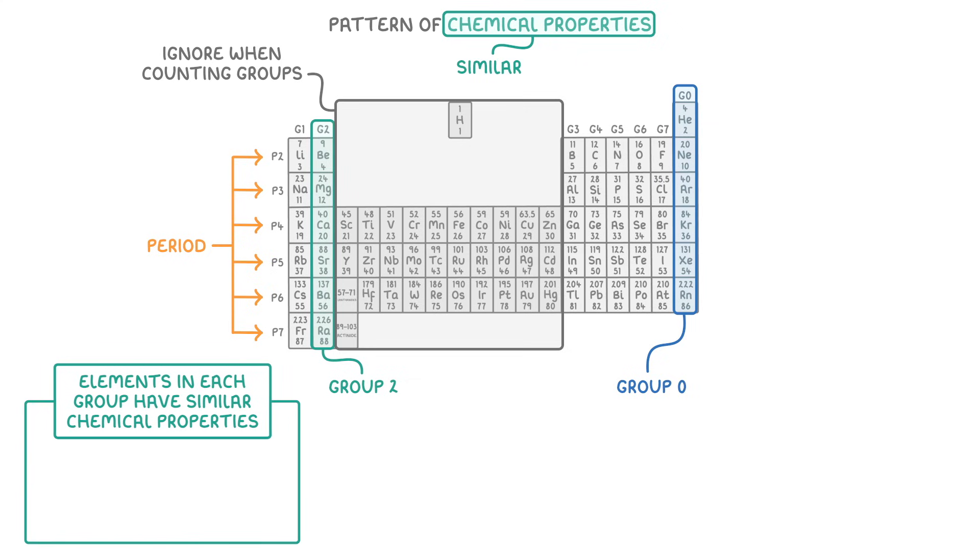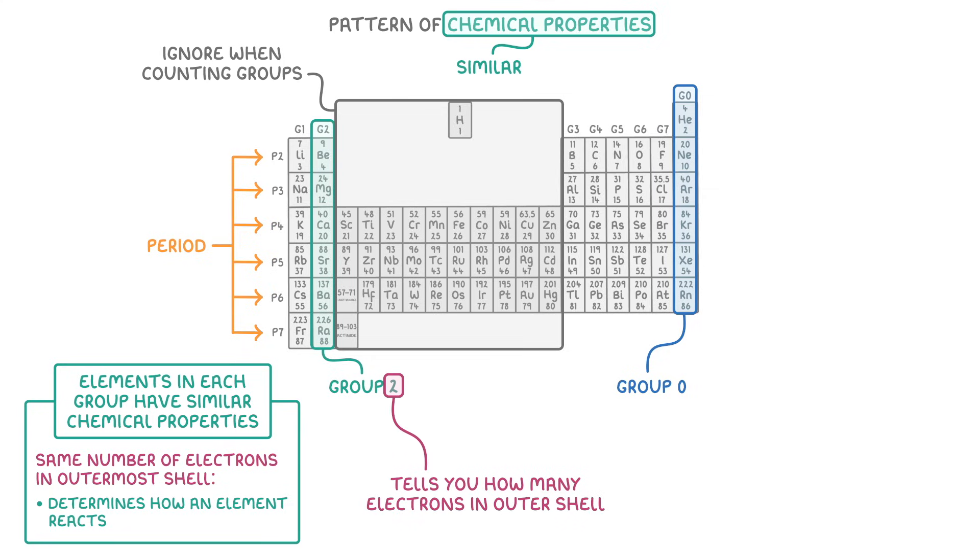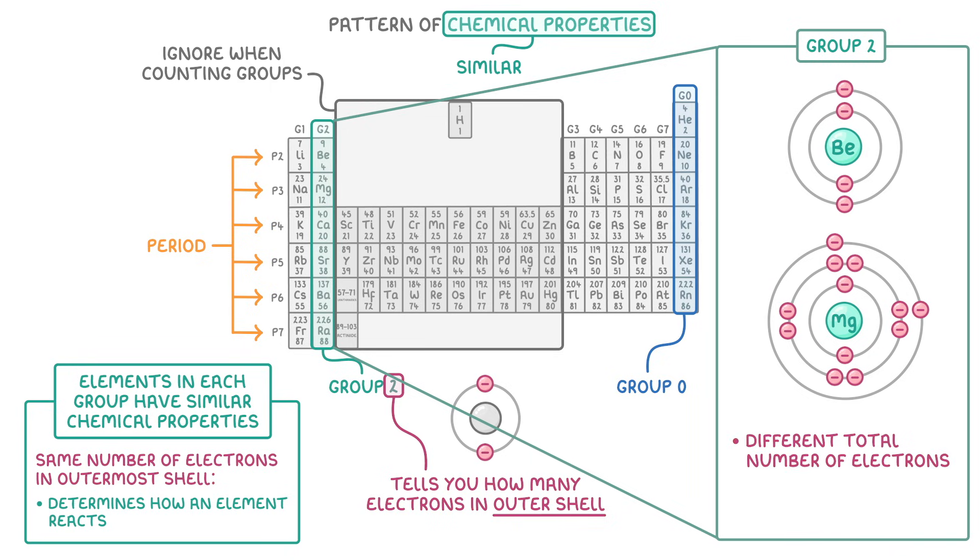The reason that elements in each group have similar chemical properties is that they have the same number of electrons in their outermost shell. And this is largely what determines how an element reacts. In fact, the group number actually tells you exactly how many electrons they have in their outer shell. So as we're looking at group 2, we know that every element in this group has 2 electrons in its outermost shell. Just make sure you don't get confused here. All the elements in a given group have different total numbers of electrons, they just have the same number of electrons in their outermost shell.